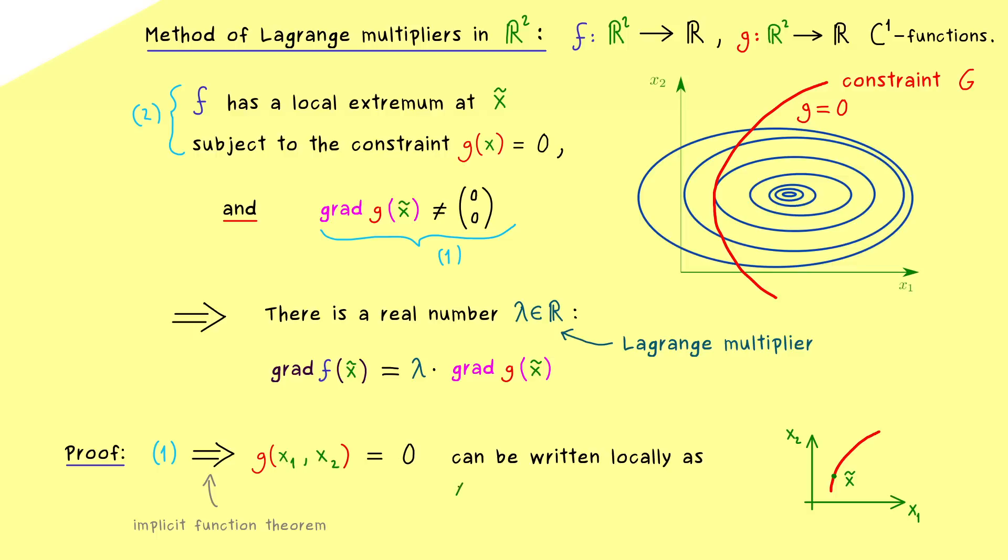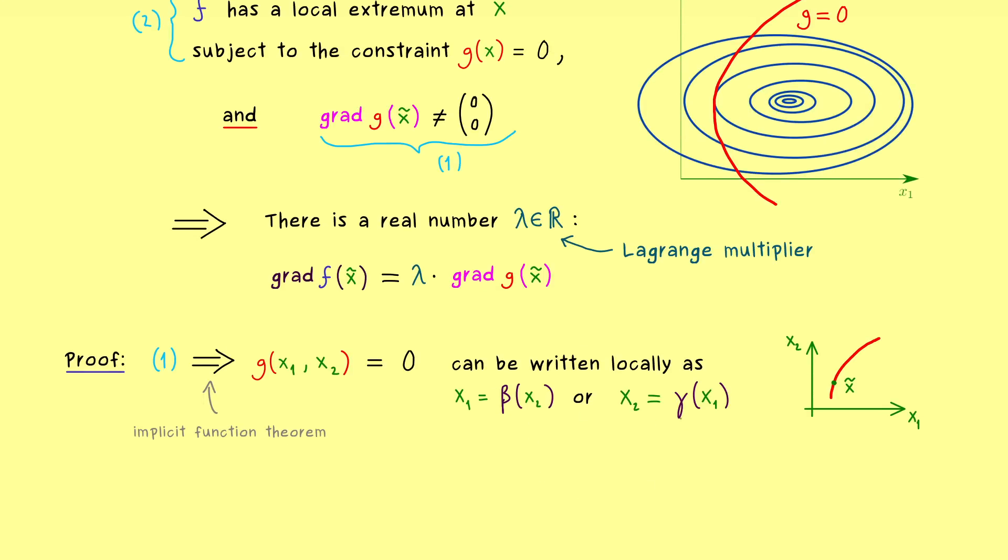So let's say here we have our x tilde and this is a graph of a function where x₁ is the independent variable. However, we could also have x₂ as the independent variable depending where the gradient has a zero component. Hence we actually have two possible cases: either x₁ equals a function β(x₂), or x₂ equals a function of x₁, which we call γ. So we have to write down a proof for each case, but because they look similar the proof will be the same. Therefore let's focus on the second case.